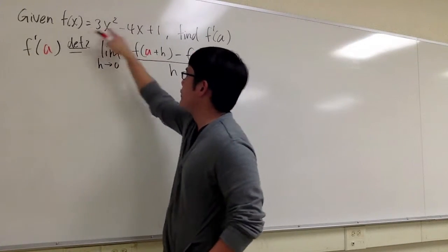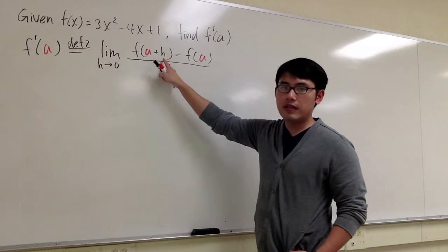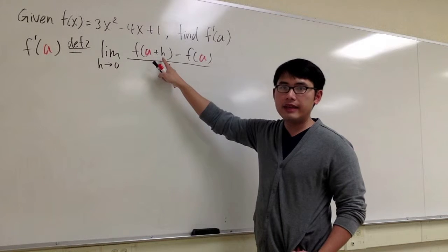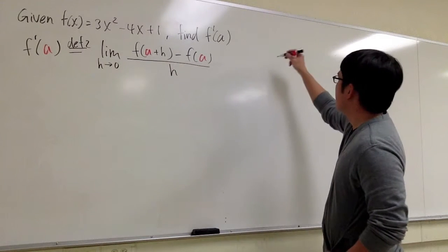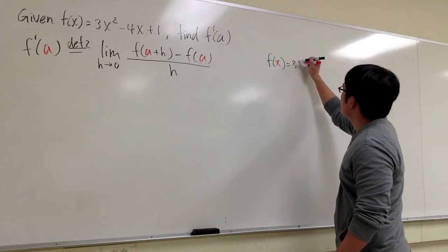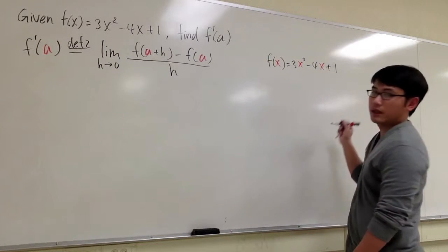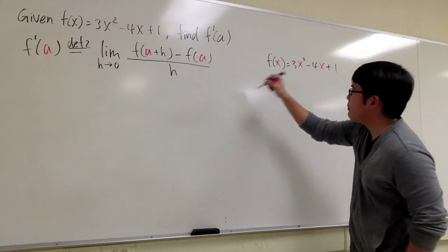And now we have to refer back to the function, this is the function. We have to figure out what this is, f(a+h), and let's do that on the side. I know that f(x) is equal to 3x² - 4x + 1.